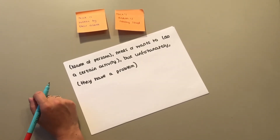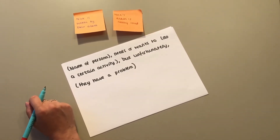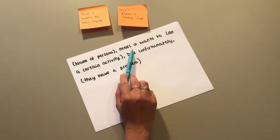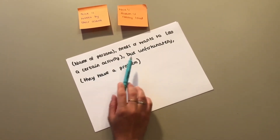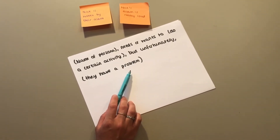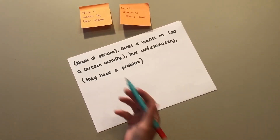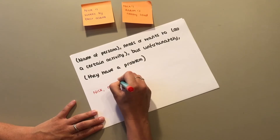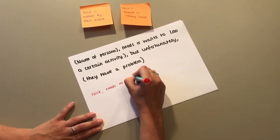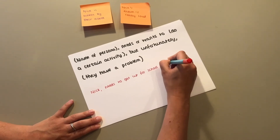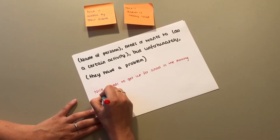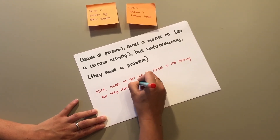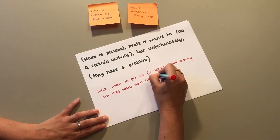Now that you have your final three problems, let's think about how they are worded to turn these problems into problem statements. We need to write them out like this: the name of your persona needs or wants to do a certain activity, but unfortunately they have a problem. So from my example above, I could write: Nick needs to get up for school in the morning, but they really don't like the sound of their alarm.